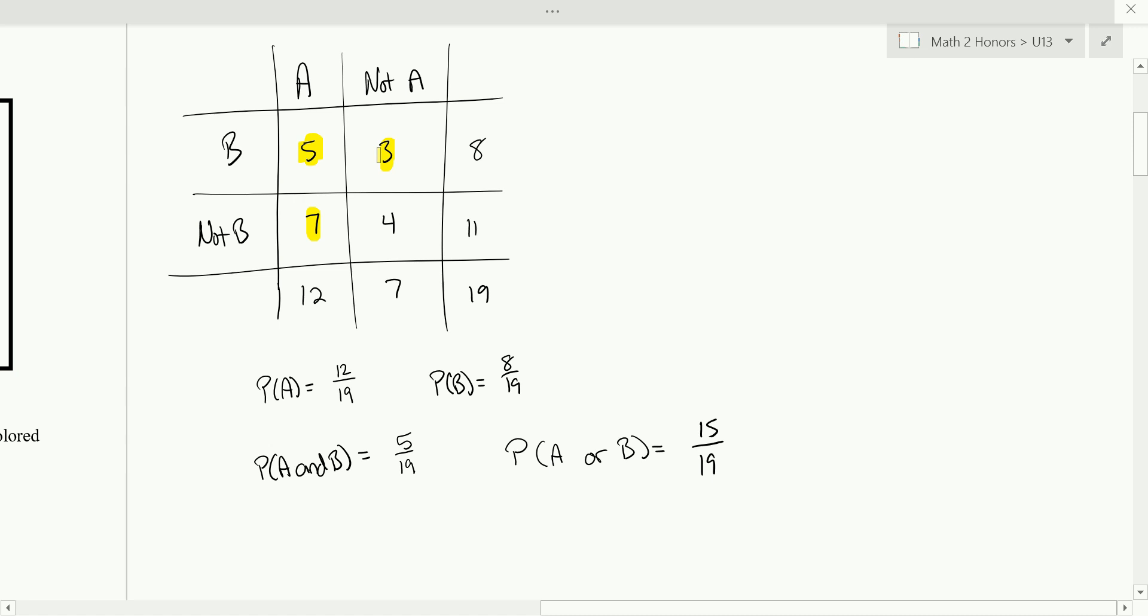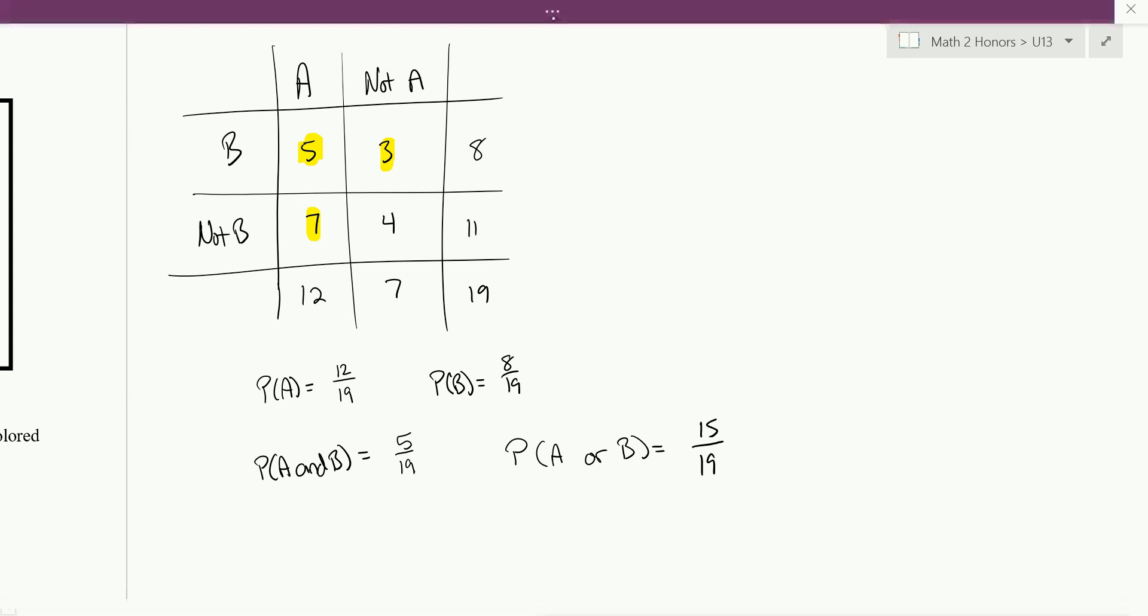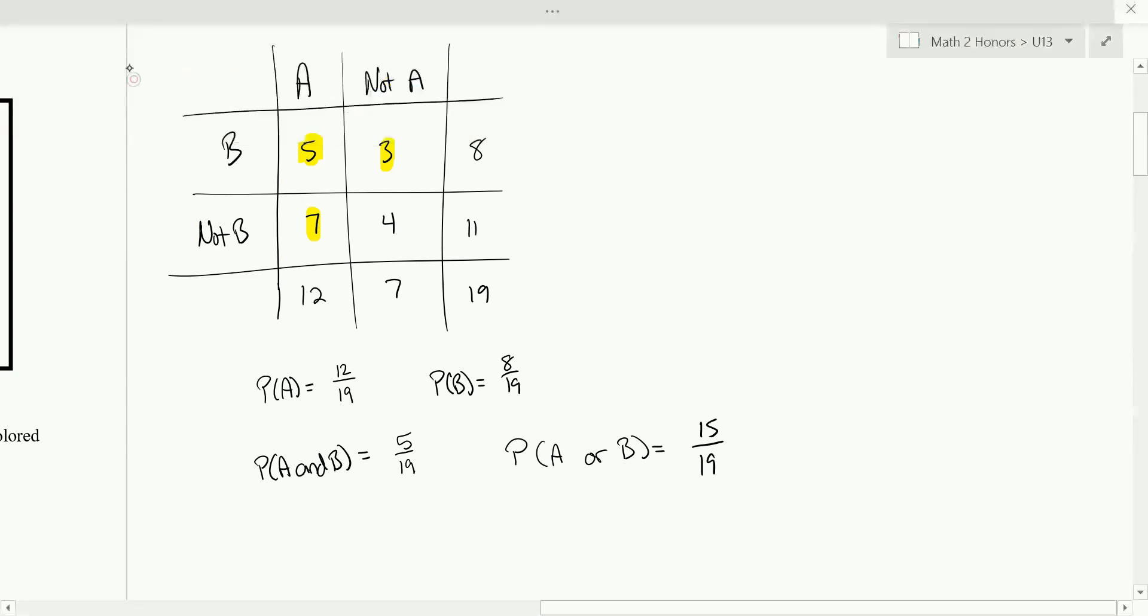Why couldn't I add just the 12 and the 8? Because that counts the 5 twice, right? We saw that. We talked about this yesterday. And so with this in mind, there's a probability formula that says the probability of A or B is equal to the probability of A plus the probability of B minus the probability of A and B.